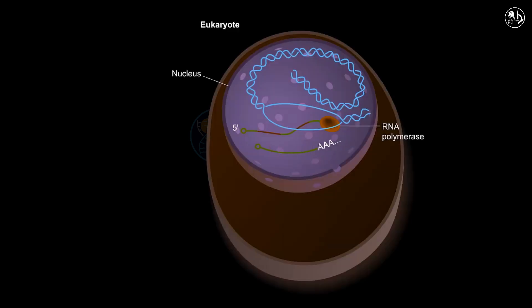After the pre-mRNA is processed, the mature mRNA leaves the nucleus and enters the cytoplasm. There it is recognized by the ribosomes, which start to translate it into a protein.